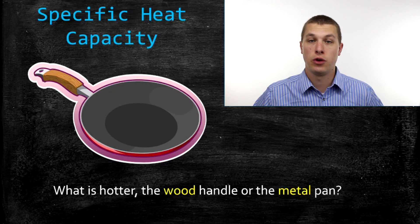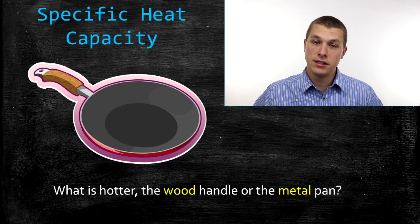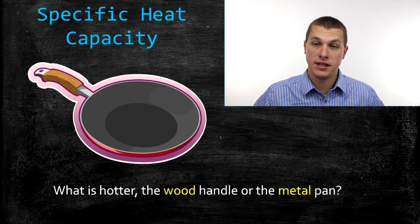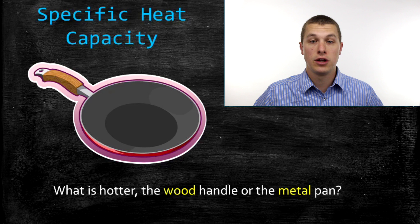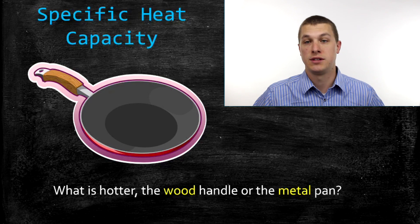In part, the reason that wooden handle is cooler than the metal is heat capacity. It takes more energy to heat up wood than it does to heat up metal, so that metal gets hotter faster. And that's what we're going to be doing in this video — talking about how easy or hard it is to heat something up using specific heat capacity.